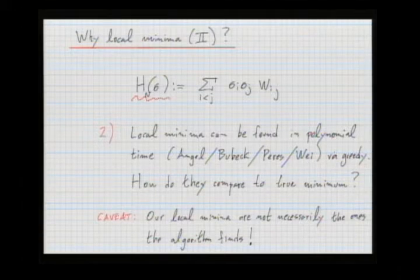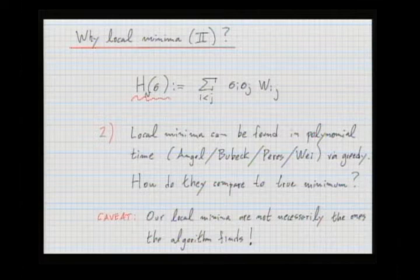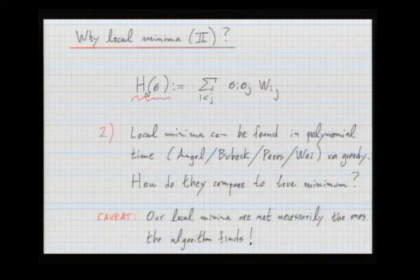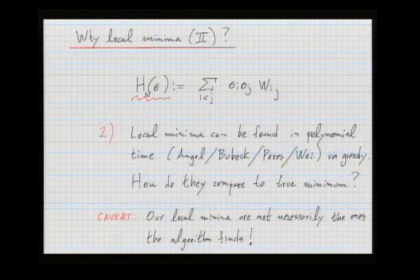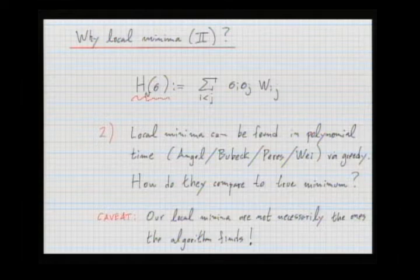That paper shows you can find local minima in polynomial time using a greedy algorithm: take your current configuration, check whether there's a coordinate that decreases energy, and if so flip it, repeating until no such coordinate exists. They proved this process stops at a local minimum in polynomial time — maybe N to the 11th or so. It's an interesting question how such local minima compare to the global minimum given by the Parisi formula, with the caveat that the algorithm's local minima are not necessarily uniform over all local minima.